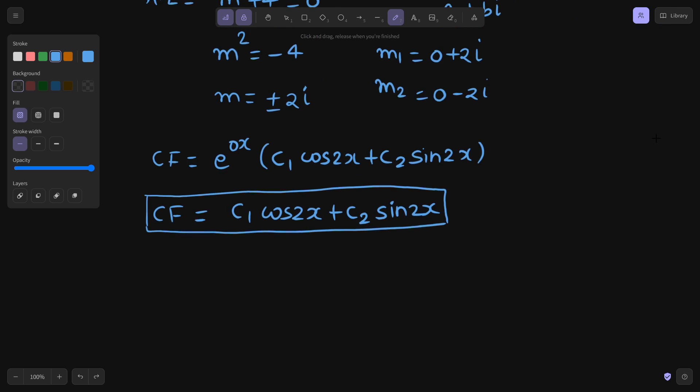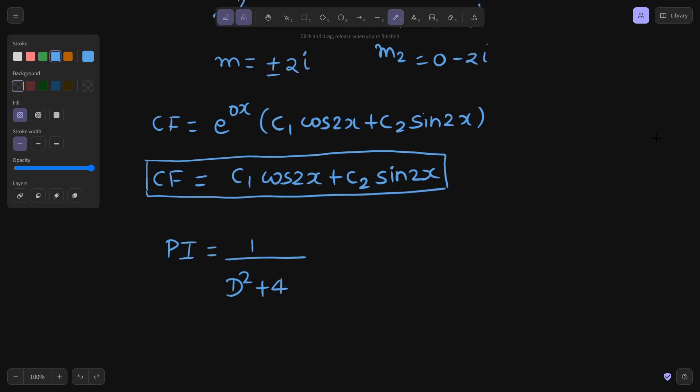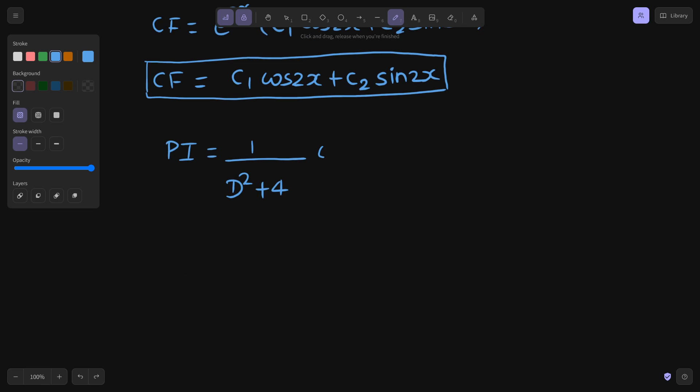What about the particular integral? Particular integral is 1 upon f of D. What is f of D? D² + 4, and this will operate on the RHS. RHS is cos 2x. Whenever the RHS is of the form cos Ax or sin Ax, what we do? We just replace D² by minus of A² and check whether by this replacement denominator is non-zero or not.